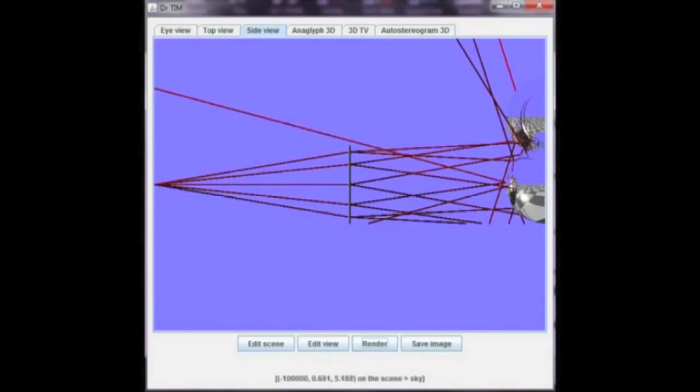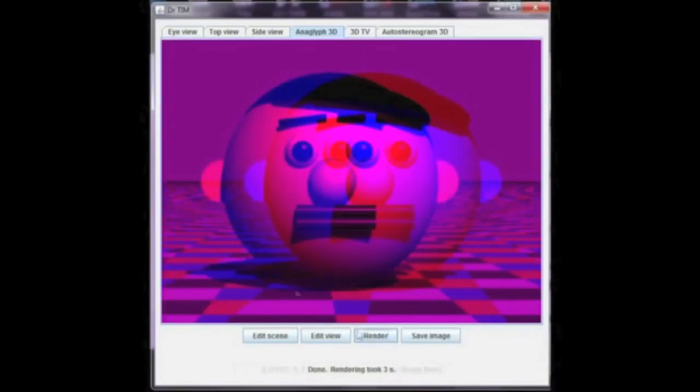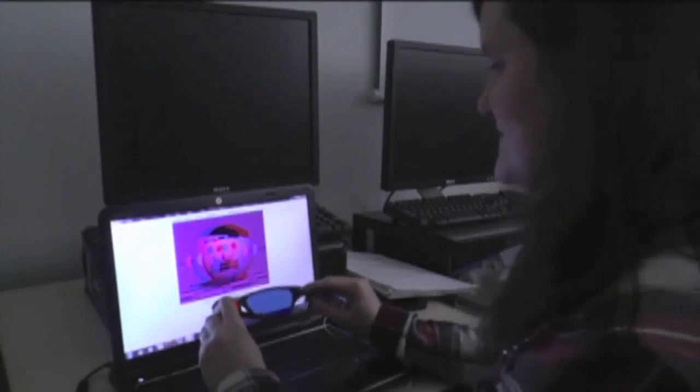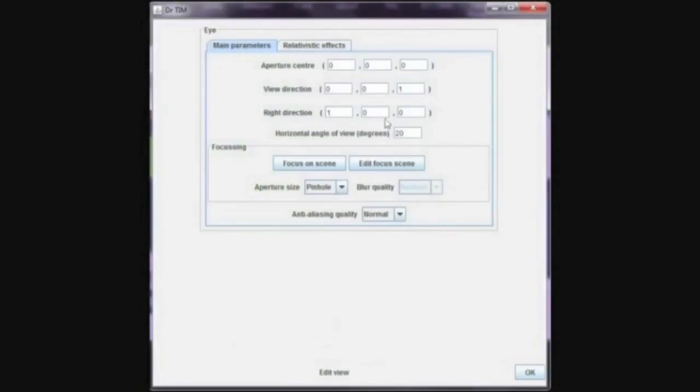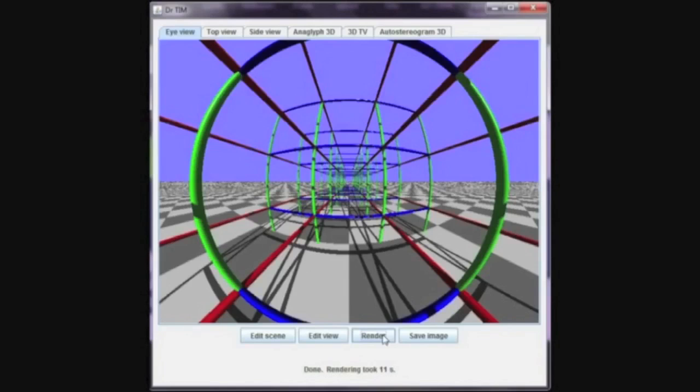We decided to add 3D capabilities to it. So if you happen to have some 3D red, blue goggles, anaglyph goggles, then you can see everything in 3D. And finally, Tim also has the capability to simulate the view if you're moving at relativistic speed.